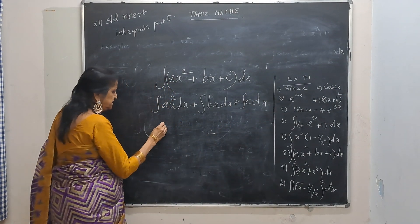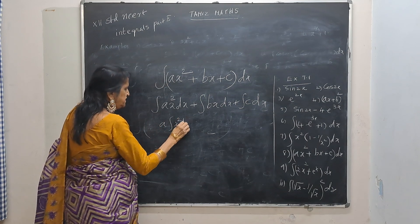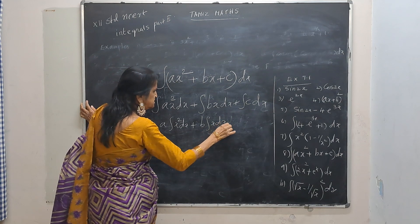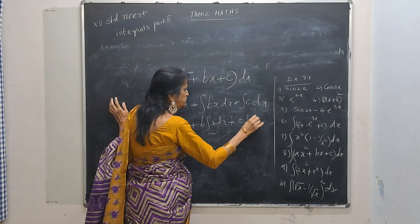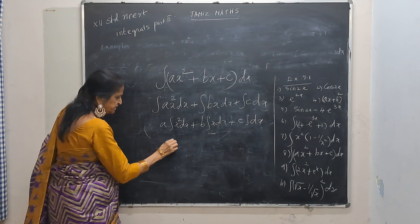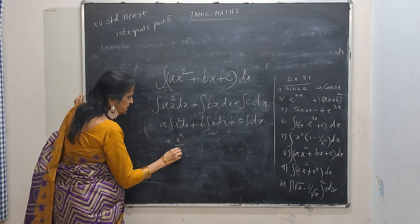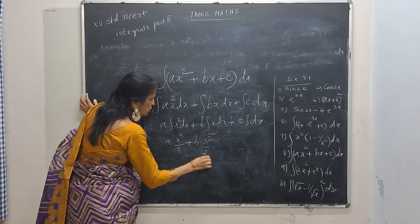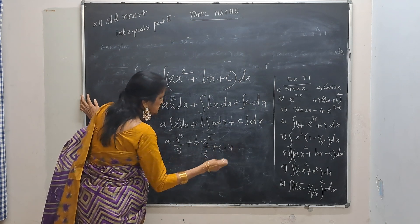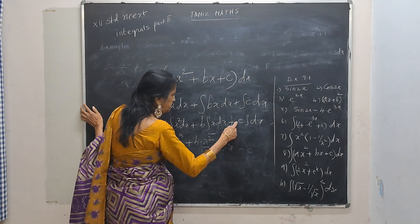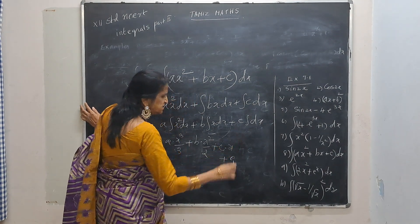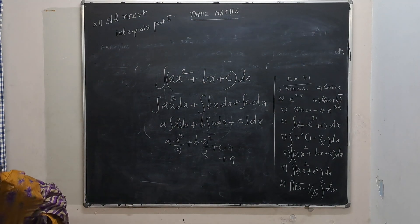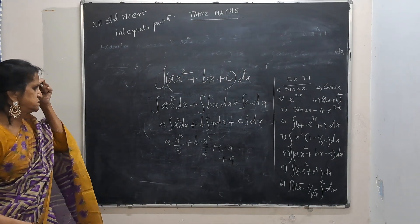A is a constant — take it out: a times integral of x squared dx. B is a constant — take it out. C is a constant — take it out. So this is a times x cubed by 3, plus b times x squared by 2, plus c times x, plus c1 (as constant of integration). No problem is complete without the constant of integration.